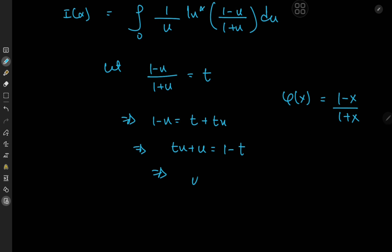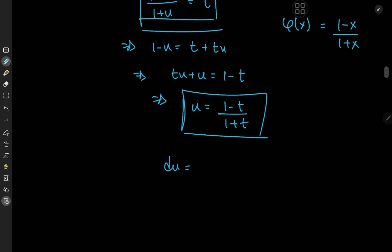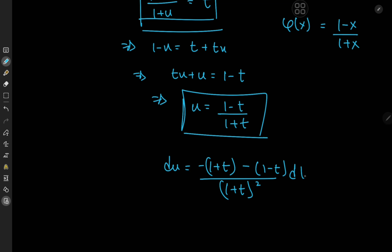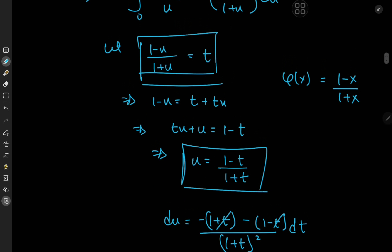Factoring out u gives us u equal to (1 minus t) divided by (1 plus t). So it works both ways. Now we can work out the differential element: on differentiation, du equals (1 plus t) times the derivative of (1 minus t), which is negative 1, minus (1 minus t) times the derivative of (1 plus t), which is 1, all over (1 plus t) squared dt. So that simplifies to negative 2 dt divided by (1 plus t) squared.